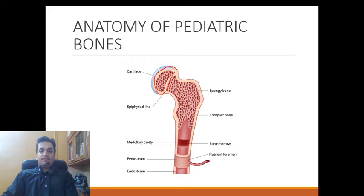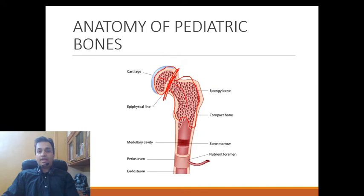Moving on to the pediatric bone: the epiphysis is well perfused and separated from the metaphysis by the epiphyseal plate. The metaphysis is an area of cancellous or spongy bone, very well vascularized, forming the connection between the epiphysis at the growing end and the diaphysis which is the shaft. The diaphysis is far denser than the metaphysis or epiphysis, and here we can see the nutrient vessel entering the bone at the nutrient foramen.